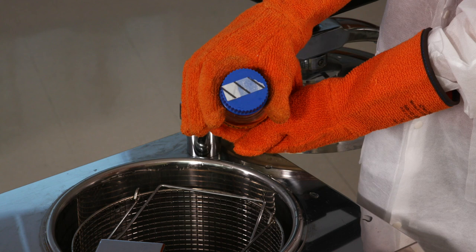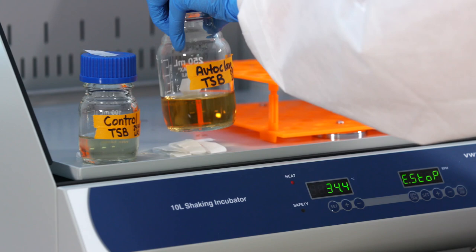Gently remove the sterilized broth and wait for it to cool. The black markings are now visible on the autoclave tape, and it tells us that it has reached the proper temperature. Place it in the incubator next to the control.